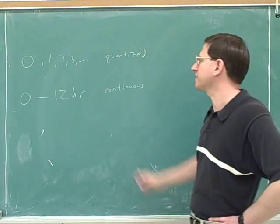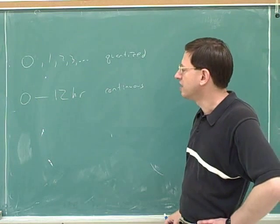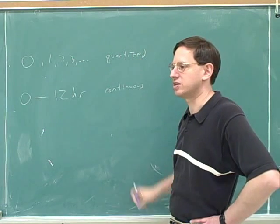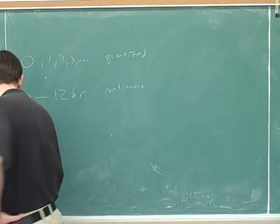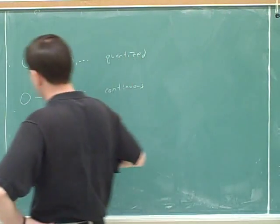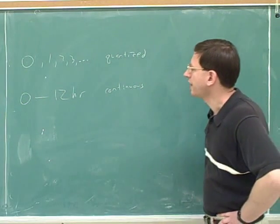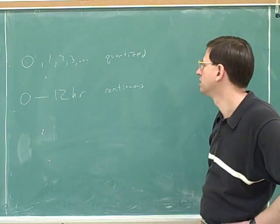Okay. So it's common sense that some things are quantized and some things are continuous. But what modern physics shows is many things that seem like they should be continuous are really quantized. Many things that seem continuous are really quantized. And we'll see the examples as we go.